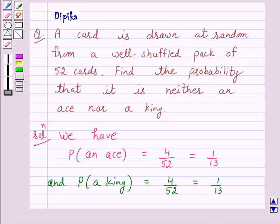Now according to the given question, we have to find the probability that a card drawn at random from a pack of 52 cards is neither an ace nor a king.